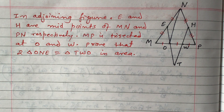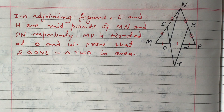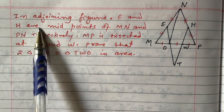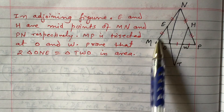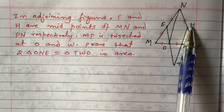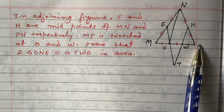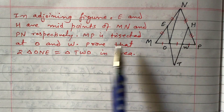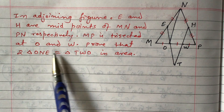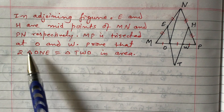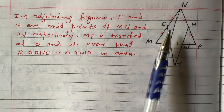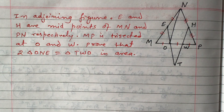A student named PSD asked a question related to the area of a quadrilateral and triangle. The question, copied from an iPad, states: in the adjoining figure, E and H are midpoints of MN and PN respectively, and MP is trisected at O and W, meaning MO equals OW equals WP. We need to prove that two times the area of triangle ONE equals the area of triangle TWO — and we will prove this theoretically in this video.